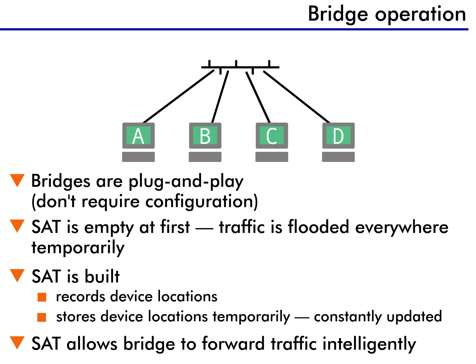What happens next? Well, remember, the bridge has an SAT — the source address table. The SAT is empty when the bridge is first turned on, so the bridge does not know where any device is located. Because of this, a bridge operates like a repeater at first. Since the bridge does not know where devices are located, all traffic is flooded everywhere.